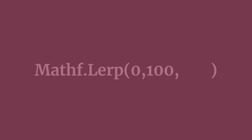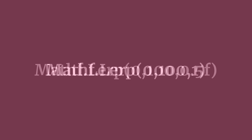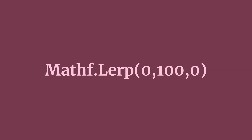For example, if you define a scale of 0 to 100 and pass in a t value of 0.5, representing half, you'll get a value of 50 back. Pass in 1 and you'll get 100, the maximum. Or pass in 0 and you'll get the minimum — in this case, also 0. And that's Lerp. That's all it does.